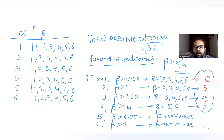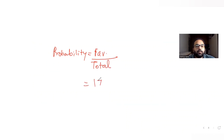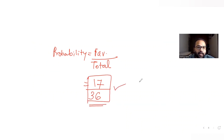The total number of favorable outcomes is 6 + 5 + 4 + 2 + 0 + 0 = 17. Since probability equals favorable outcomes divided by total possible outcomes, the probability is 17/36. That is the answer for this question.